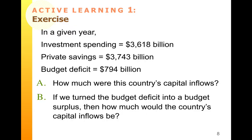Go ahead and get out your active learning sheet. We're going to start a new active learning paper for macro unit three — this is active learning number one. I've given you some numbers for investment spending, private savings, and budget deficit. You're going to answer questions A and B. You do need to show your math, and you're going to use that balance equation to figure out in A, what are the country's capital inflows, and in B, with a slight change, what would the capital inflow be?